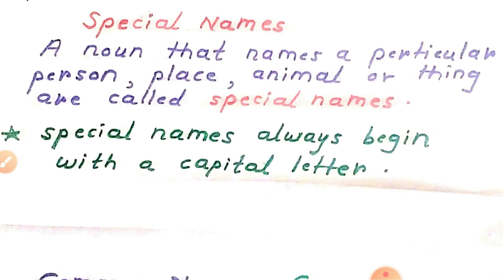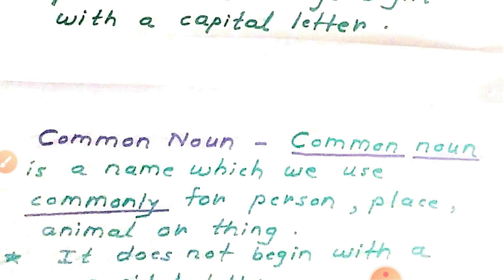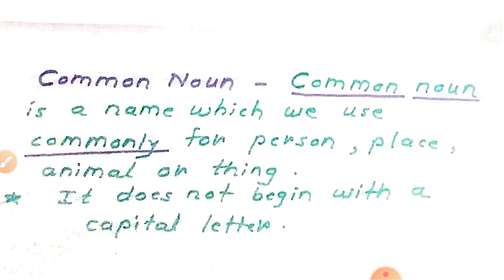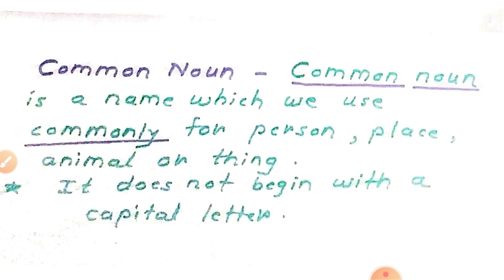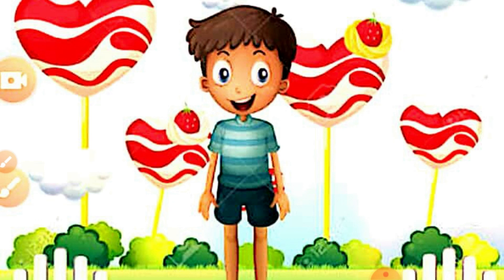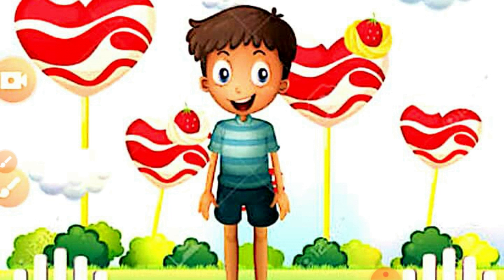You should also learn about common nouns. In simple words, a common noun is a name which we use commonly for a person, place, animal, or thing. For example: boy, girl, teacher, doctor — these are common nouns. Who is he? He is a boy. The word 'boy' is used for all boys — this is the common word we use for all boys, so 'boy' is a common noun.